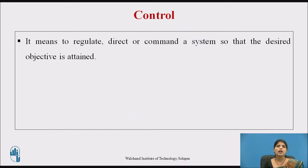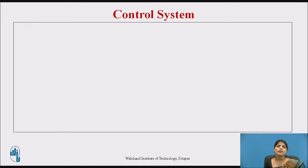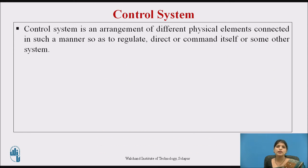Now we are moving towards control. Control means to regulate, to direct, or to command a system so that the desired objective is attained or achieved. Combining these two words — control plus system — it becomes a control system. A control system is an arrangement of different physical elements connected in such a manner so as to regulate, direct, or command itself or some other system.